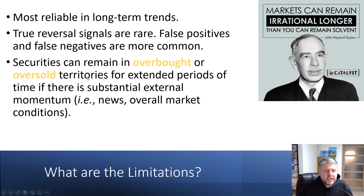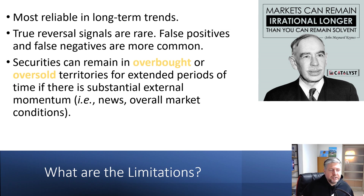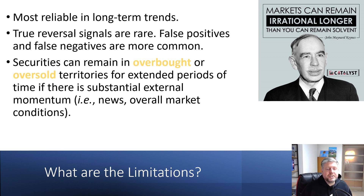Typically stock prices move based on external conditions, and in my mind that's the big flaw with TA. I think TA is useful for price identification, but as a predictive measure on its own I don't really like it — it's good to have the knowledge. Securities can remain in overbought or oversold territories for extended periods if there is substantial external momentum, like news or overall market conditions. Markets can remain irrational longer than you can remain solvent — just because you identify a security in oversold territory and buy in doesn't mean it's going to reverse. It might stay in oversold territory or drop even lower.